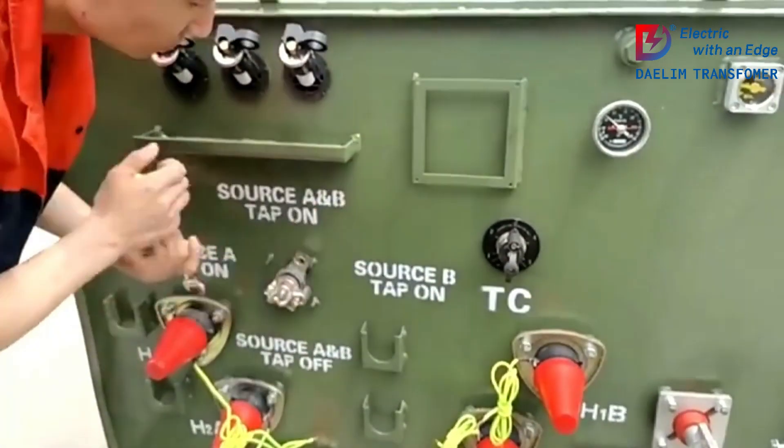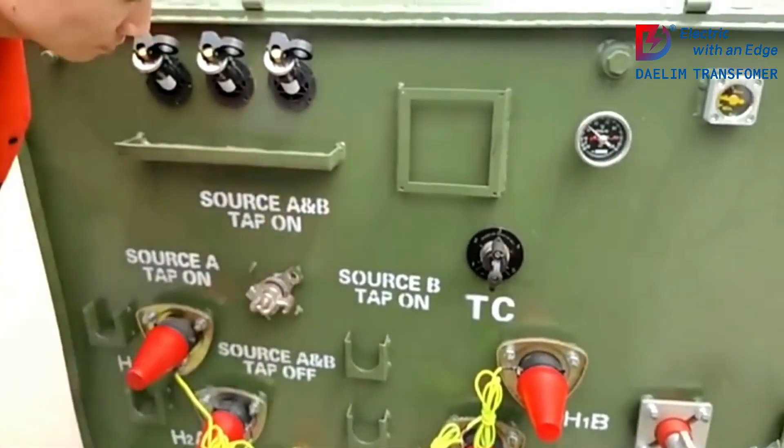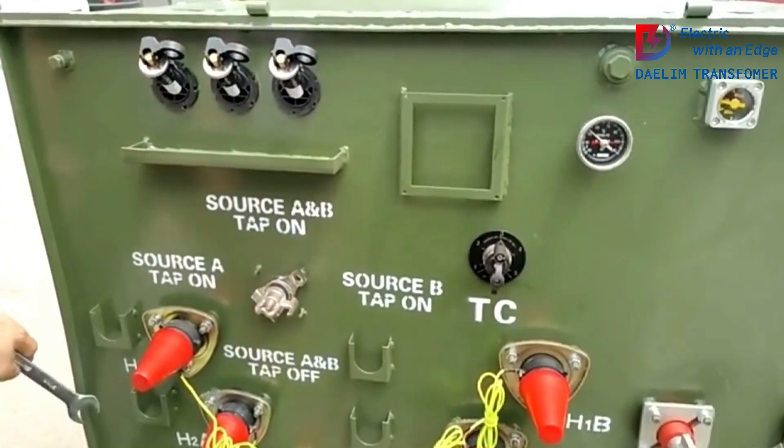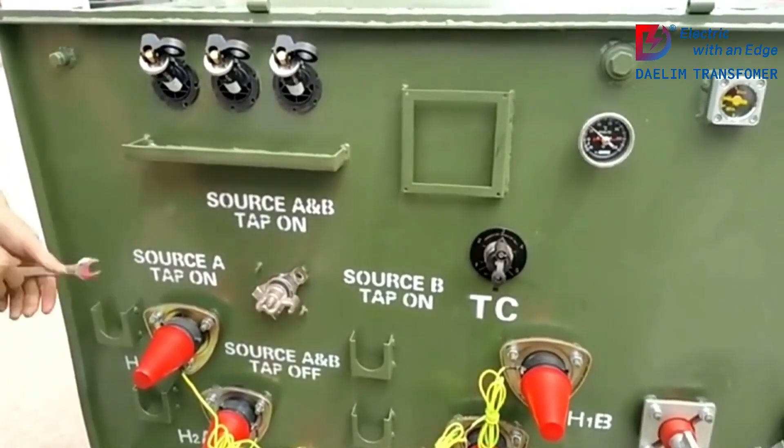Secondly, it helps in fault current limitation. A transformer with higher impedance will have a lower fault current, which can protect downstream equipment from damage during short circuits.